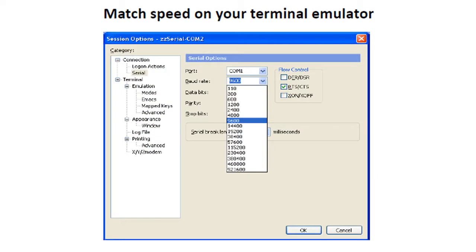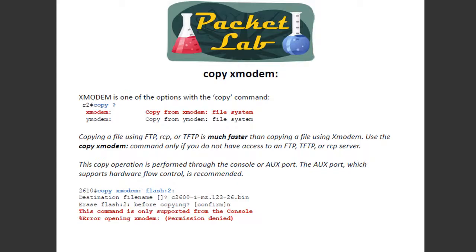I'm actually going to skip this slide because we did this with the actual application, so you've seen how to set this. So we've got our laptop connected to the console line. We've got our terminal emulator and we've matched speeds on that console line with the terminal emulator, and we've found a relatively fast Xmodem speed that we can agree on. We've got our IOS image and we're ready to move it over. So how do we do this?